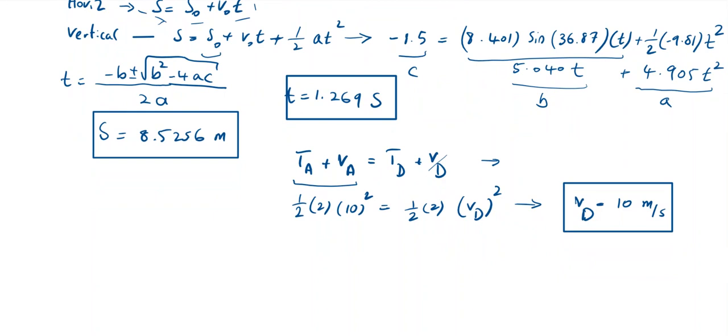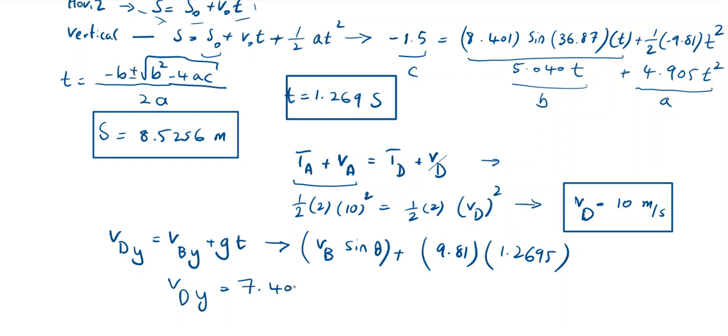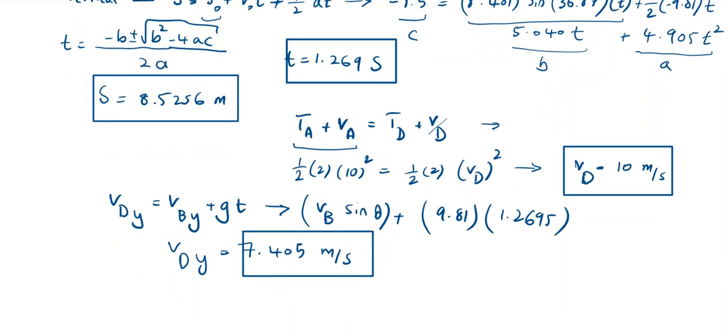So from here I will get easily the V at D is 10 meters per second. And so we find that the velocity at D is equal to 10 meters per second. Velocity at D in the Y direction, if you want to find that vertical component of velocity at D, is equal to V at B times sine theta plus 9.81 times the time, and we got the time here as 1.2695. So velocity at D in the Y direction is equal to 7.405 meters per second, which is the vertical velocity at D.